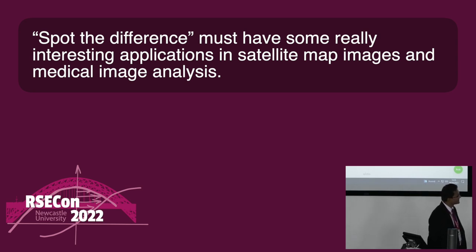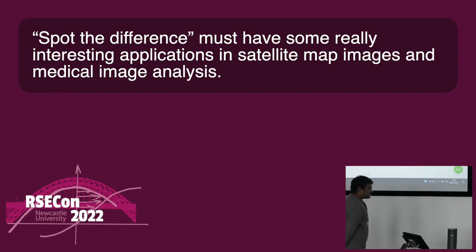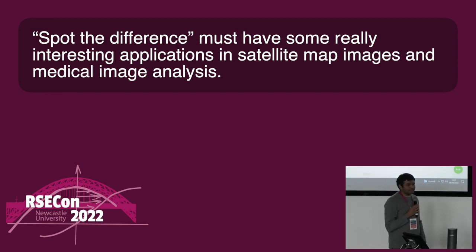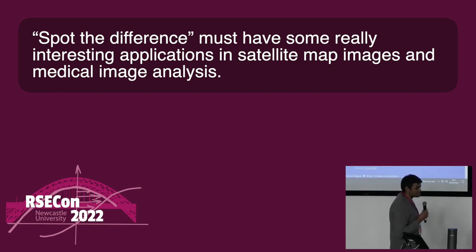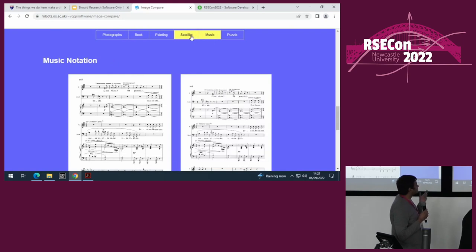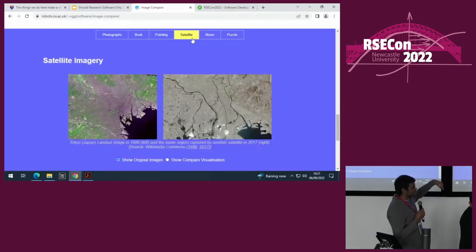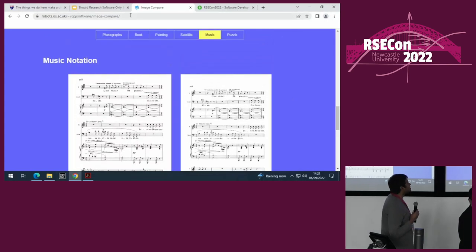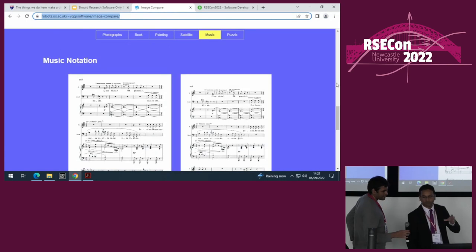Q&A: A question notes that 'spot the difference' must have interesting applications in satellite map images and medical image analysis. Yes, it does. What we are planning next is to automatically spot the difference — that's our next step. There are a few more use cases, including music: it's similar to book editions where the same music changed over time, helping study musical style. Right now you can go to the website and use the software on your mobile or laptop, anywhere, for free.